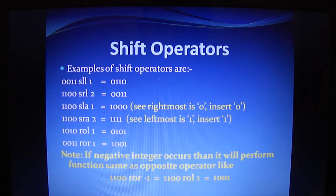Similarly, if you are using shift arithmetic right, it will see the leftmost bit which is 1 in this example of 1100 SRA 2, and it will shift the bits towards right and insert number of ones on the left side.